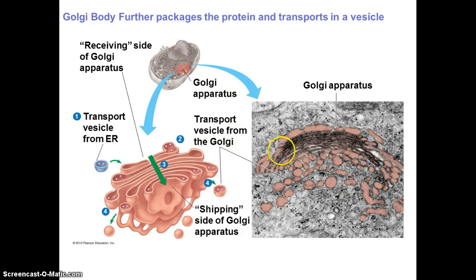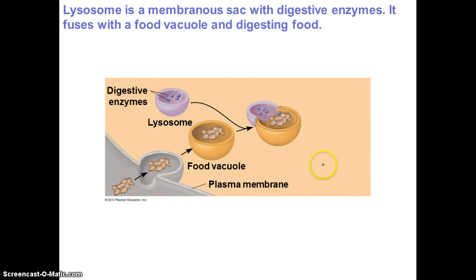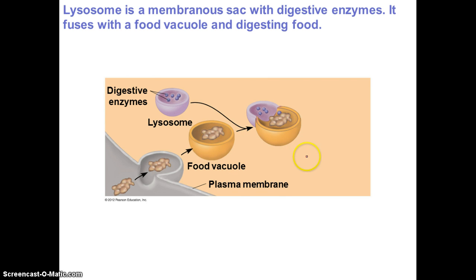Once the protein gets to the Golgi apparatus, it'll get further chemically modified, then packaged and sent to its particular location — either out of the cell or within the cell. The lysosome is also like a vesicle surrounded by a membrane. This is where you take a polymer, degrade it, and recycle it back into monomers. The lysosome fuses with a food vacuole, releases enzymes, and breaks down its contents. Lysosome isolates particular areas so it can do its reactions — if these enzymes were floating in the cytoplasm, it would damage the cell.